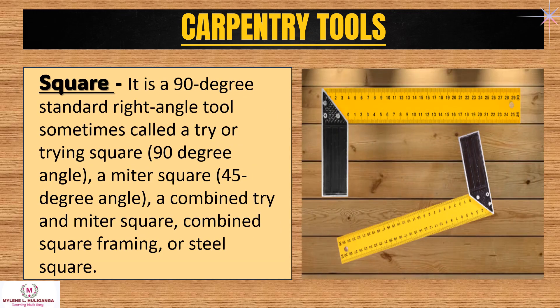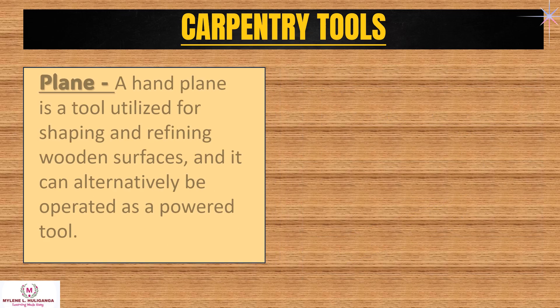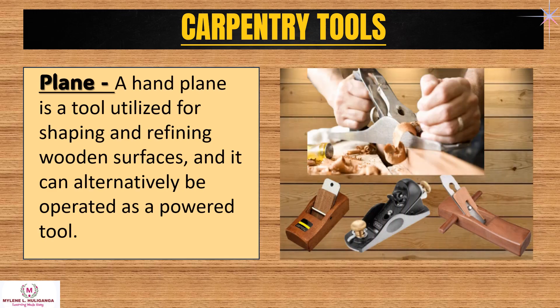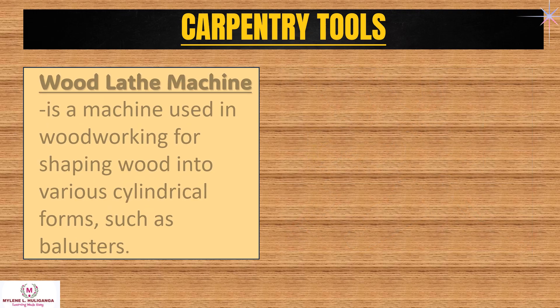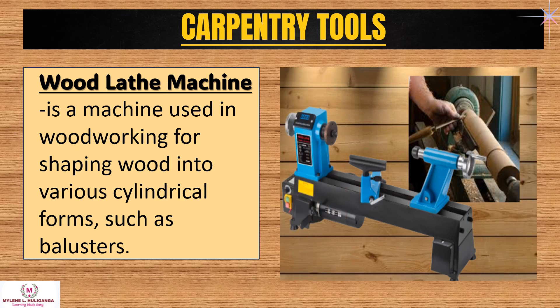Square: a 90-degree standard right-angle tool, sometimes called a tri or trying square (90-degree angle), a miter square (45-degree angle), a combined tri and miter square, combined square framing, or steel square. Plane: a hand plane is a tool utilized for shaping and refining wooden surfaces, and it can alternatively be operated as a powered tool. Wood lathe machine: a machine used in woodworking for shaping wood into various cylindrical forms, such as balusters.